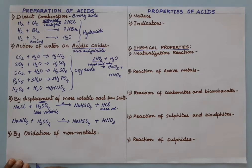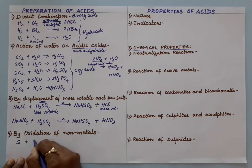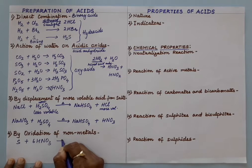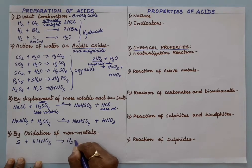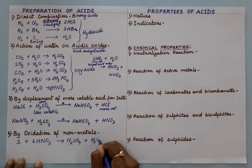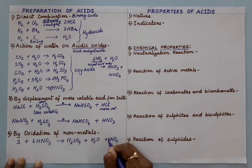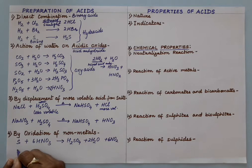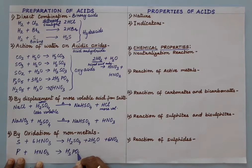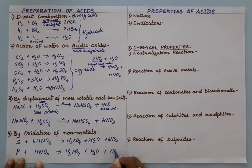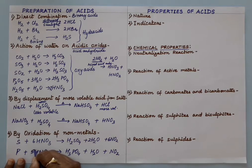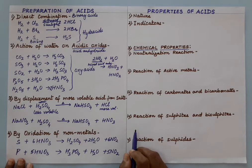The fourth method is oxidation of non-metals. A non-metal like sulfur or phosphorus is oxidized by concentrated nitric acid, which is a very strong oxidizing agent. Concentrated nitric acid when it oxidizes sulfur, it gives sulfuric acid, and the by-products are water and nitrogen dioxide. If phosphorus reacts with nitric acid, it gives phosphoric acid H₃PO₄, with water and nitrogen dioxide as by-products.